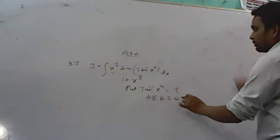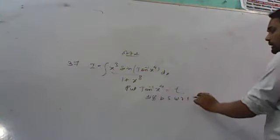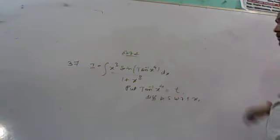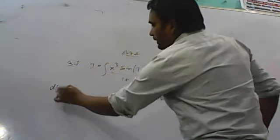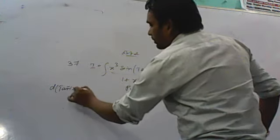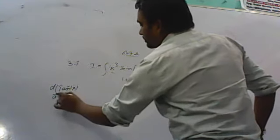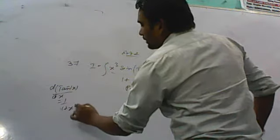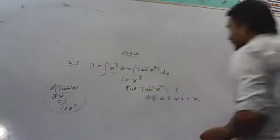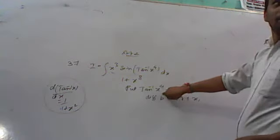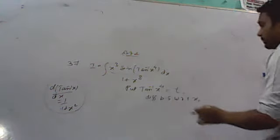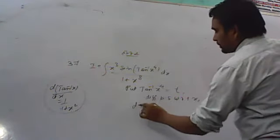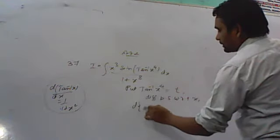So we have differentiation of tan inverse x is 1 over (1 plus x square). So here x would be x⁴. So now we differentiate, so this is the derivative of x.